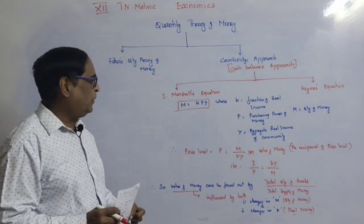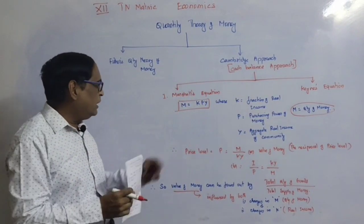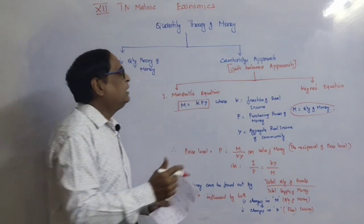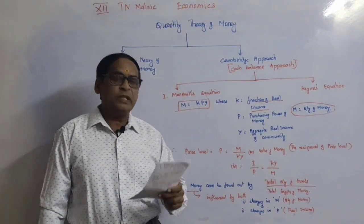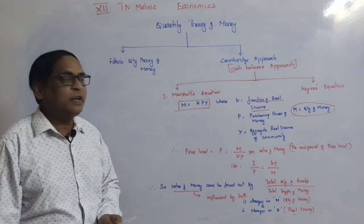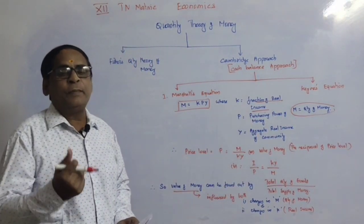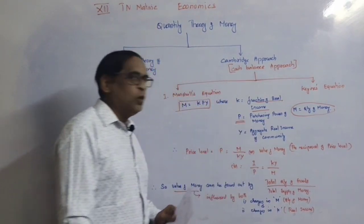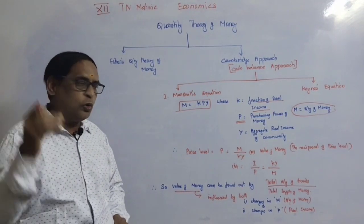M is equal to KPY. M is nothing but the quantity of money. K is the fraction of the real income which the public desires to hold. P is the purchasing power of money. Y is the aggregate real income of the total community — the total real income.